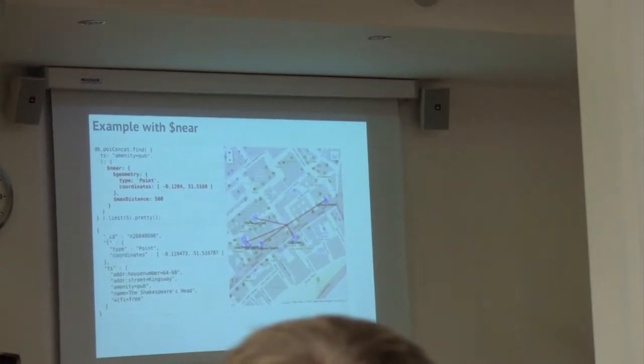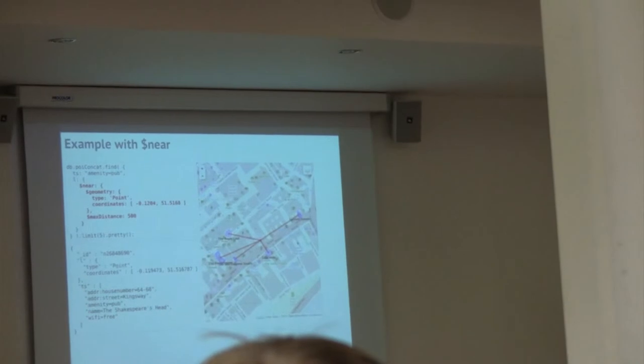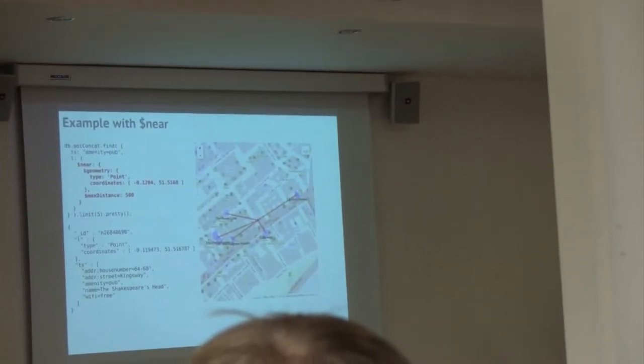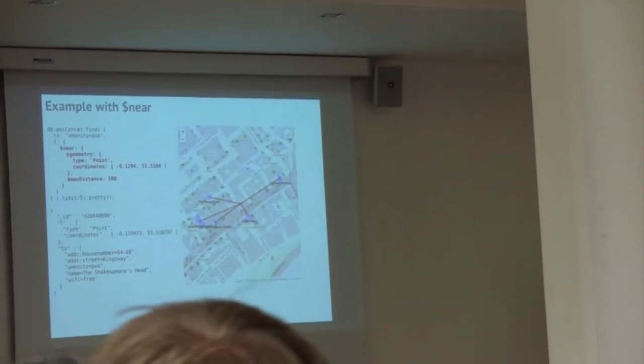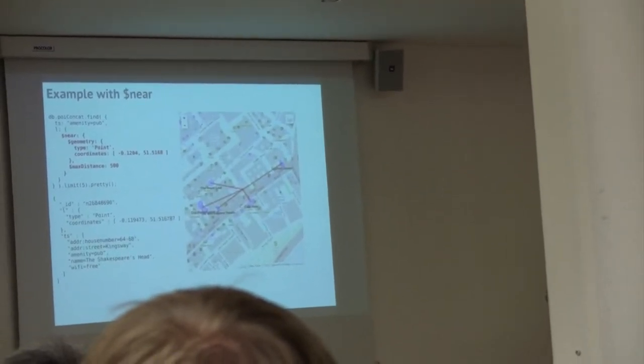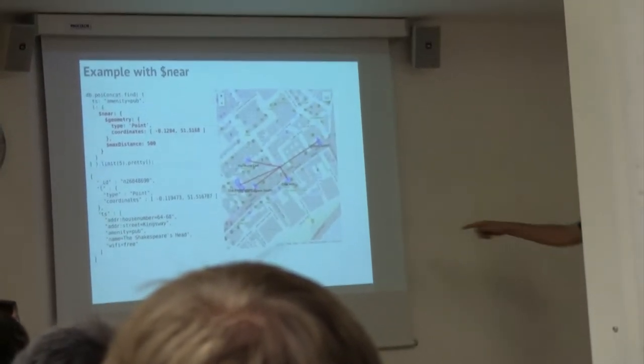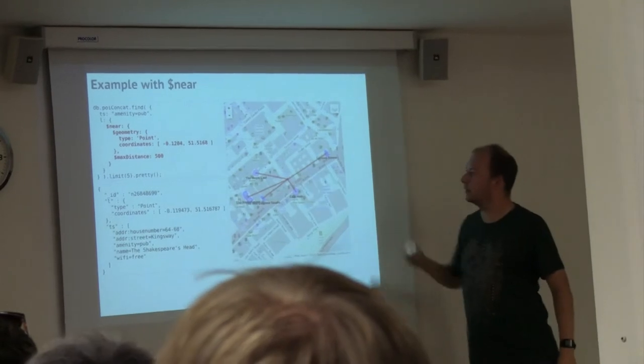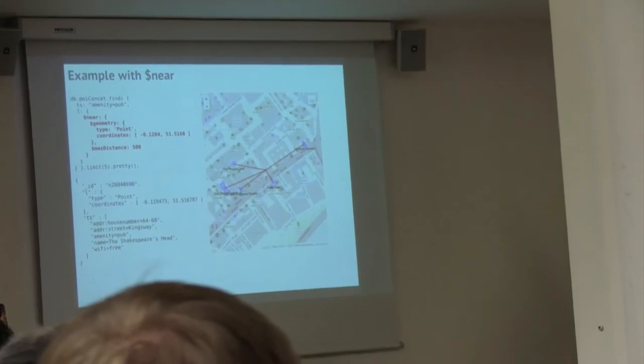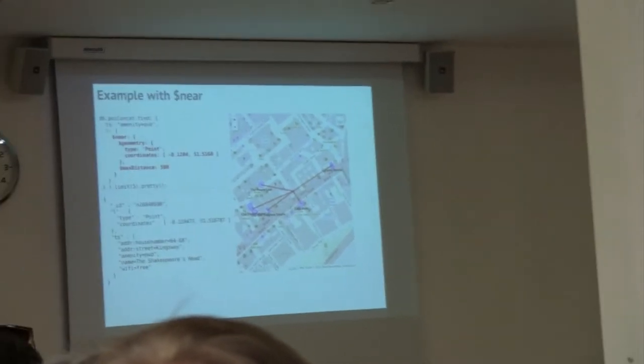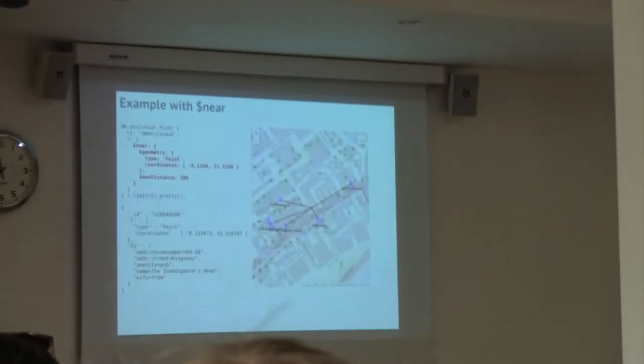Because you basically... At the top you see amenity equals, so basically it tells you give me all the pubs. And then it also matches against the L field. And it gives you the near keyword. The near keyword basically is find it near this geometry, which in this case is a point where it could be a line or a polygon as well. And then tell me the maximum distance of 500 meters. Basically what it says, give me all the pubs near this point, which happens to be right here. And then give me all the pubs within 500 meters. And then limit it to five.